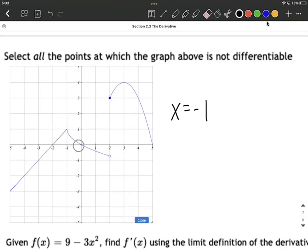So at negative one, where we have this cusp or sharp corner, that's going to be a problem—it's not going to be differentiable there. And again at positive two, we're going to have a problem there as well.